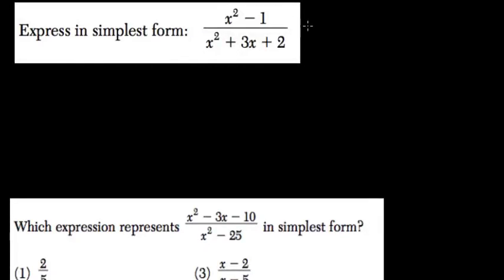Express this in simplest form. We have a difference of perfect squares in the numerator. So x squared minus 1 becomes x plus 1 times x minus 1.